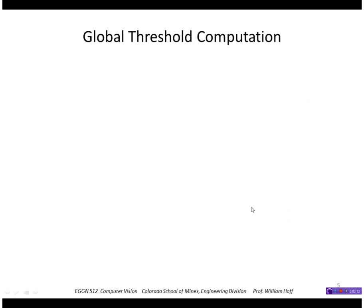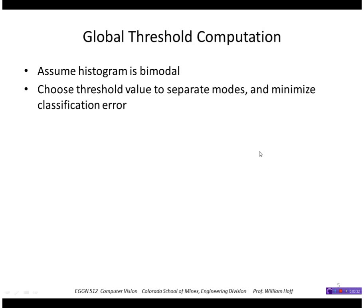So how do you compute a global threshold? So instead of trying to pick it manually you can compute it automatically. If you assume that the histogram is bimodal, namely it contains two types of objects, one light and one dark, what we would want to do is choose the threshold to separate those two modes and that would minimize the classification error of accidentally classifying a bright object as a dark object. A standard technique to do this is called the Otsu algorithm and it minimizes the within group variances.